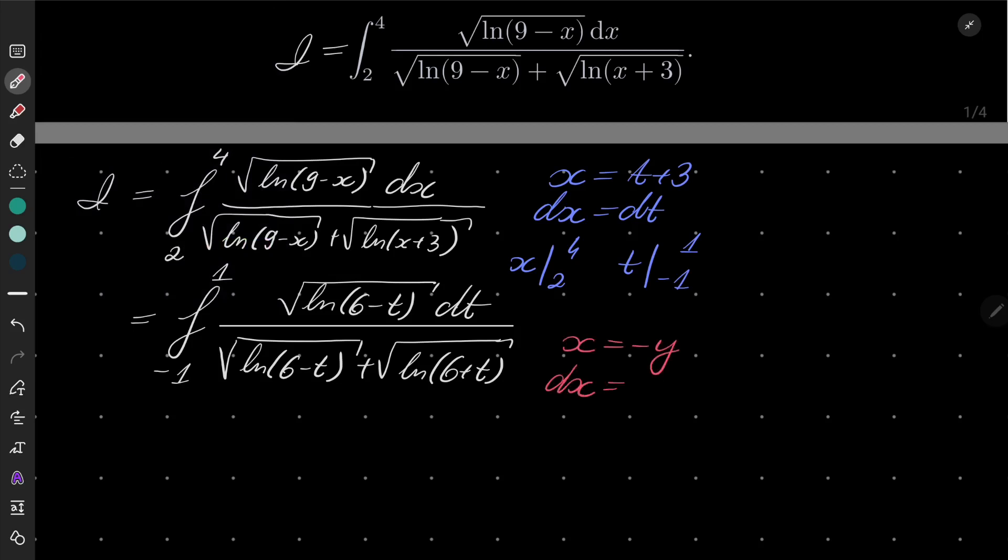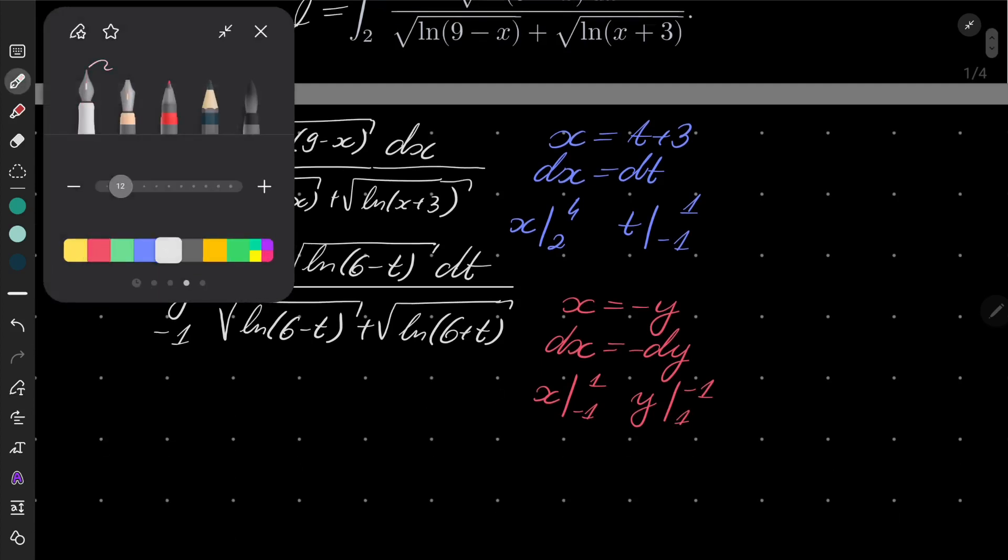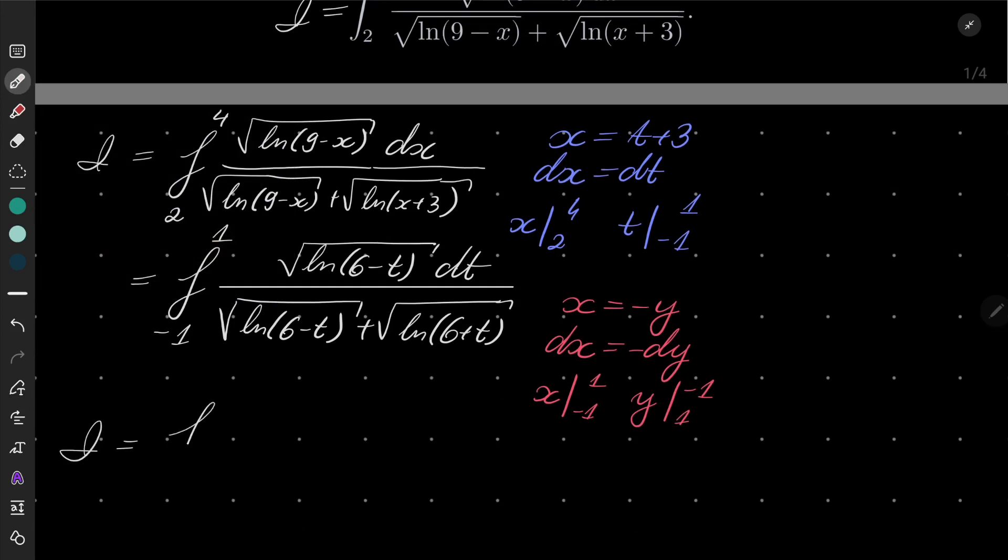x was from minus 1 to 1, which means that y is from 1 to minus 1. And the very same integral can be written as an integral from 1 to minus 1 of natural log of—sorry, not x but t, our variable is called t by now, sorry.